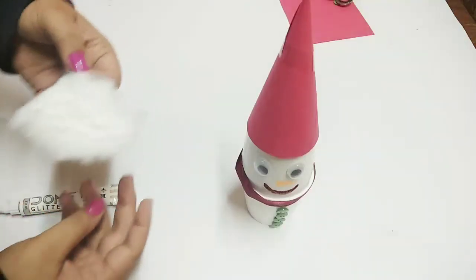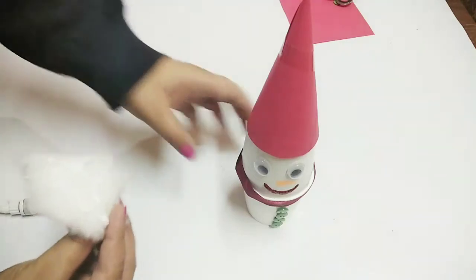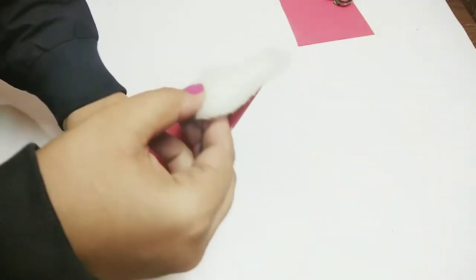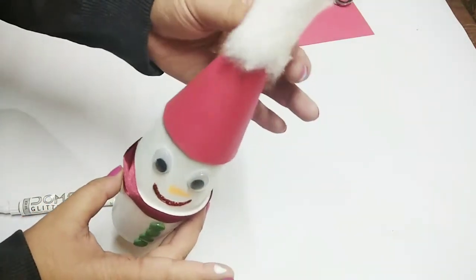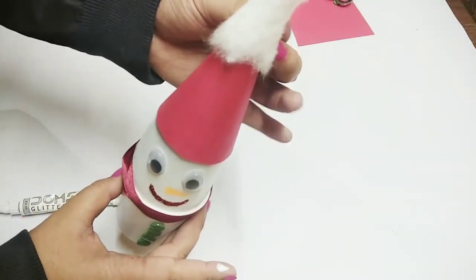And the last step for making this snowman is that we will place the cap on the cotton. You can place it on any other way. I have put it with Fevicol and stuck it like this.